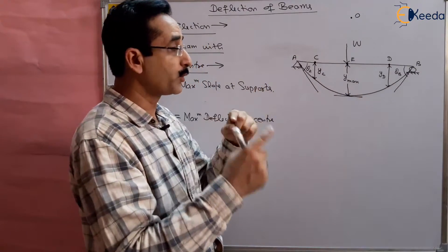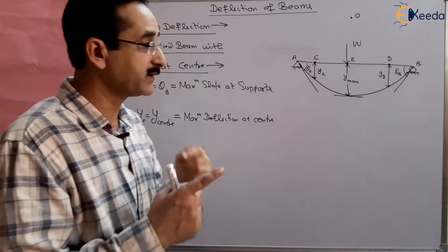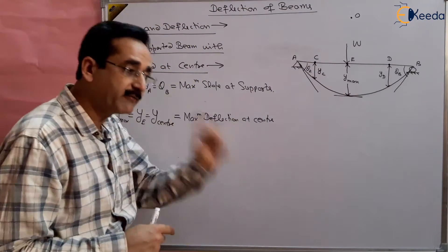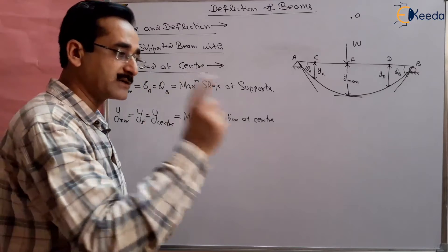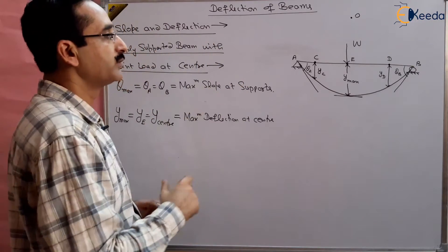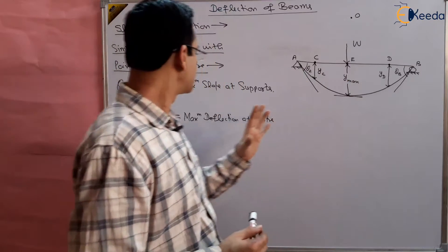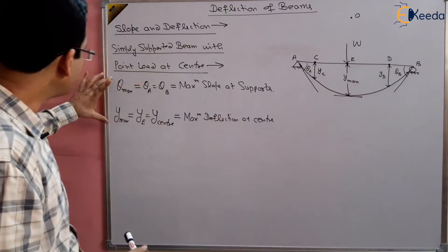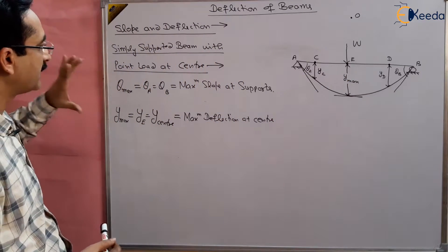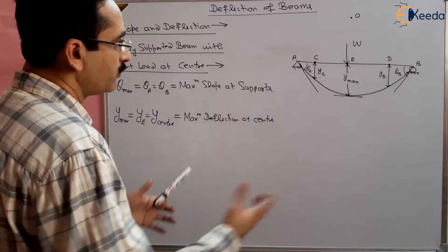Our aim is to find out these two maximas — maximum slope and maximum deflection — because the beam may fail due to maximum slope or maximum deflection. More importantly, maximum deflection, because the chances of failure due to deflection exist even though the stresses are within a certain limit. Even though the stresses are within limit, the beam may fail due to higher deflection. Our aim is to find out these slopes and deflections.